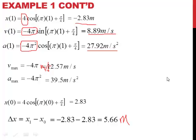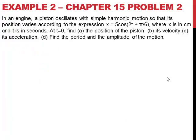Let's do another example. This is problem 2 from the textbook. In an engine, a piston oscillates with simple harmonic motion so that its position varies according to x equals 5 cosine(2t + π/6), where x is in centimeters and t is in seconds — keep in mind answers will be in centimeters. At t equals 0, we want to find the position of the piston, its velocity, its acceleration, and we want to find the period and amplitude of the motion.